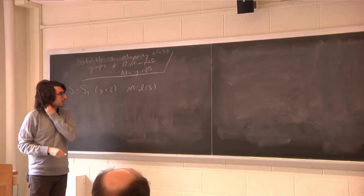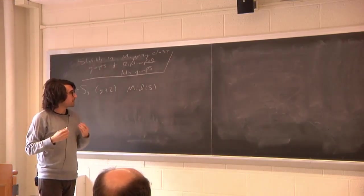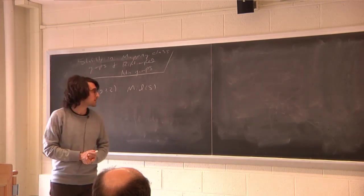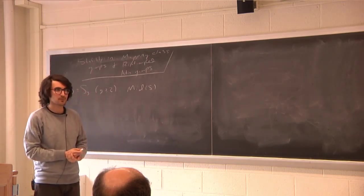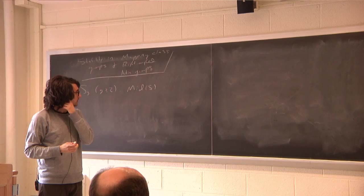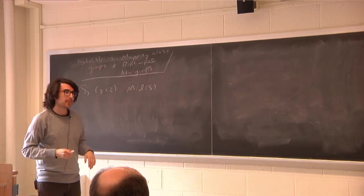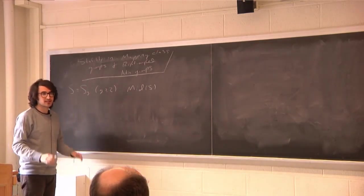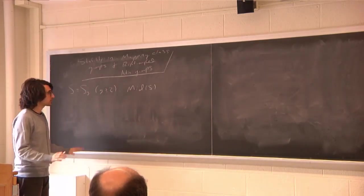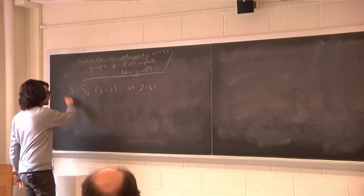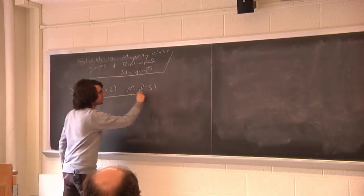The notion of convex co-compact subgroups of mapping class groups was introduced by Farb and Mosher in 2001, in part to study hyperbolic extensions of surface groups. I want to tell you what that story is.